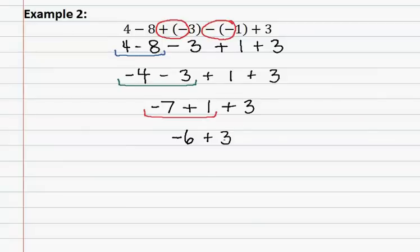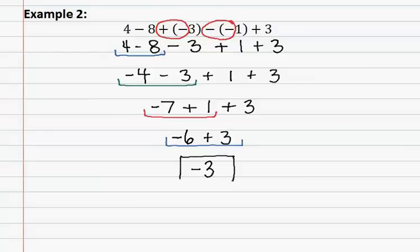We bring down the positive three. We now only have two numbers remaining: negative six and positive three. They have different signs, therefore we must subtract them. Six minus three gives us three. We then determine the sign — since six is the larger number, we keep its sign, which was negative. Therefore, the answer is negative three.